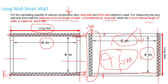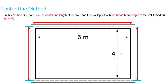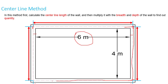Now the next thing is the centerline method. In this method, we first calculate the centerline length of all the walls. For example, with an internal dimension of 6 meters, we add half the thickness of the wall on each side to reach the center. Similarly, for the 4-meter wall, we add half thickness on each side to find the centerline. After calculating the centerline lengths, we multiply by the breadth and depth of the wall to find the total quantity.